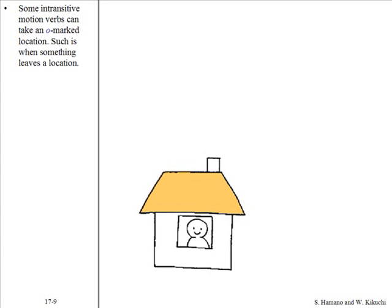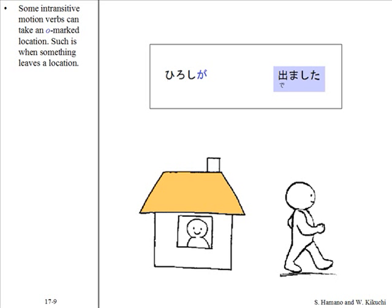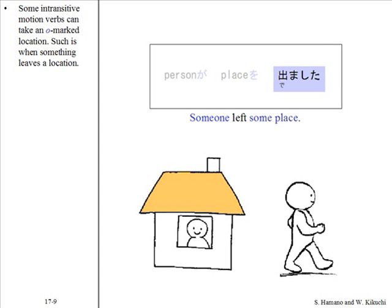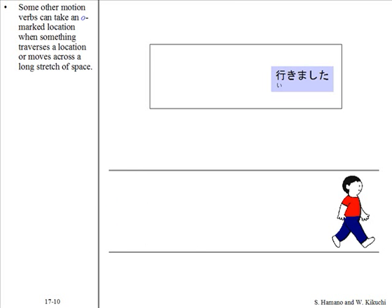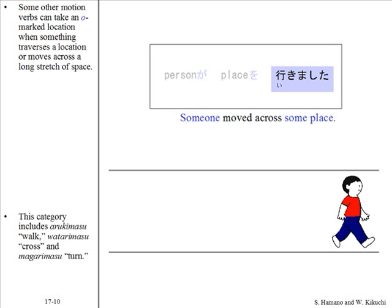Some intransitive motion verbs can take an o-marked location, such as when something leaves a location. For example: Hiroshi ga boku no uchi wo demashita. Orimasu is another such verb. Some other motion verbs can also take an o-marked location when something traverses a location or moves across a long stretch of space. For example: Hiroshi ga kono michi wo ikimashita. This category includes arukimasu, watarimasu, and magarimasu.